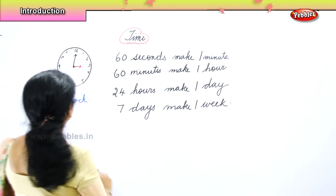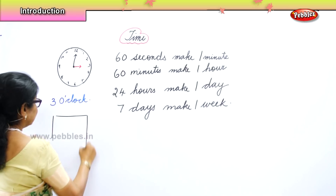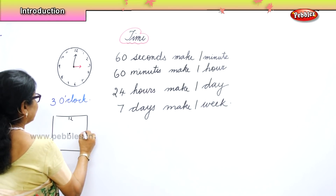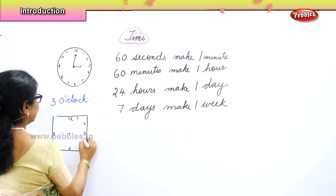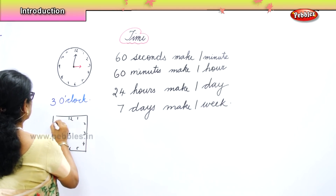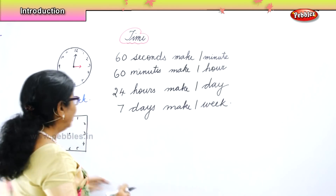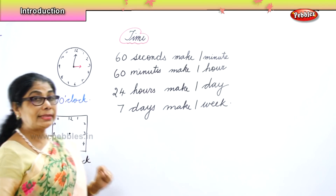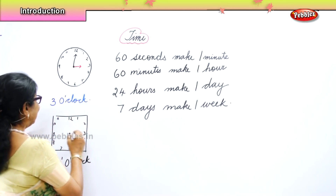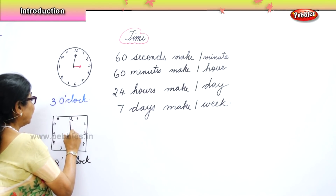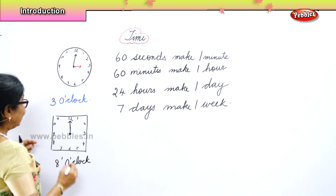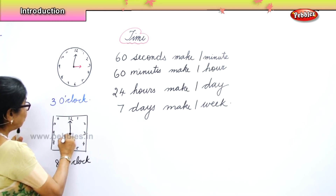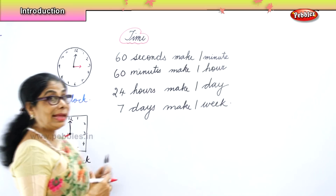That is reading time. Now I draw another clock. Here is another clock. Now at what time you go to school? You go to school at 8 o'clock. So we are going to show 8 o'clock. The long minute hand points to the 12, and the short hour hand must point toward 8. This is called 8 o'clock.